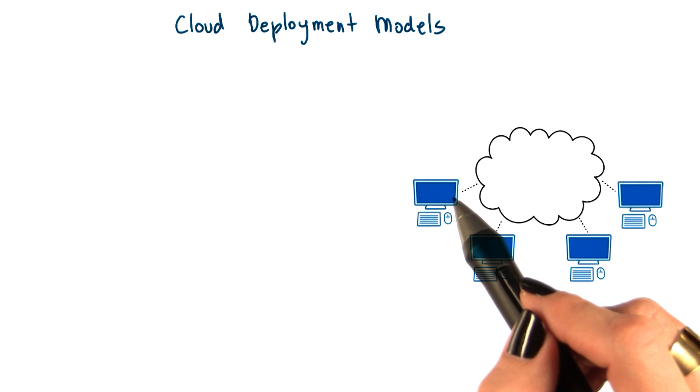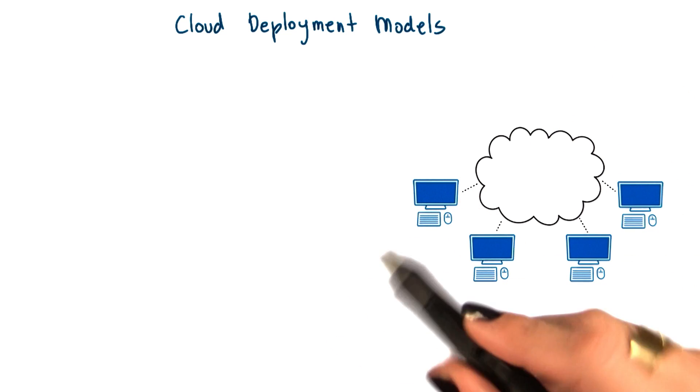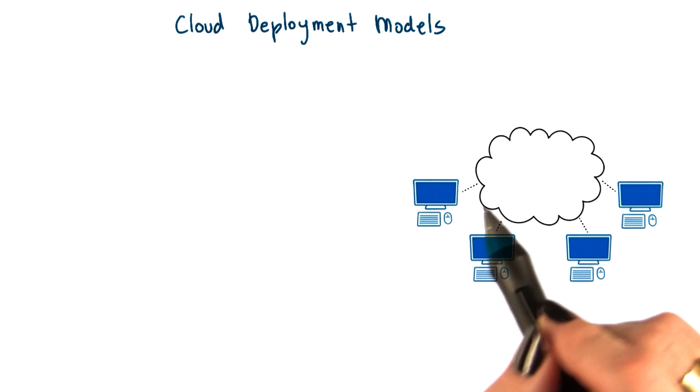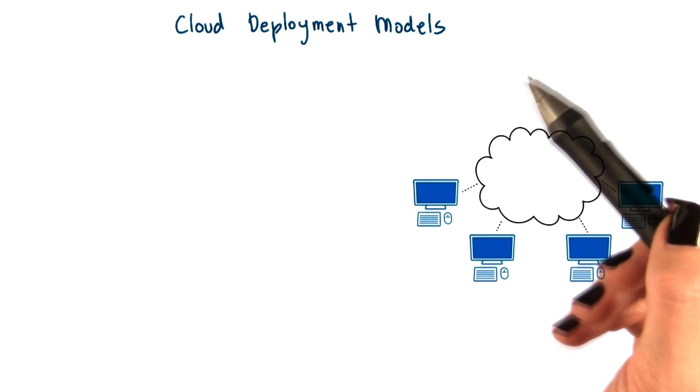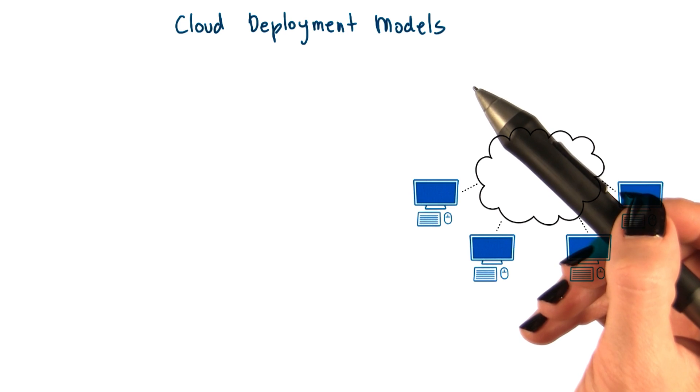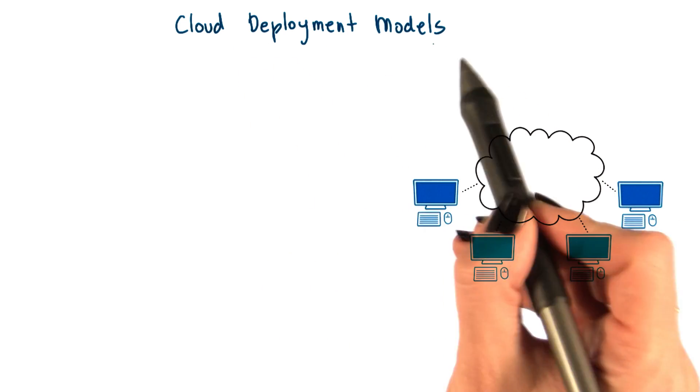The National Institute of Standards and Technology, which adapted a definition for cloud computing in 2011, also defined different types of clouds. The first dimension how clouds are classified is based on the deployment models.